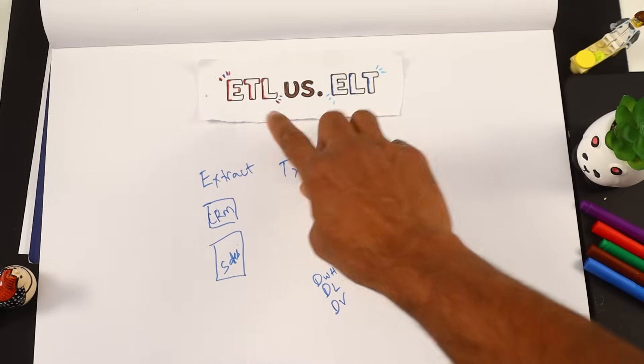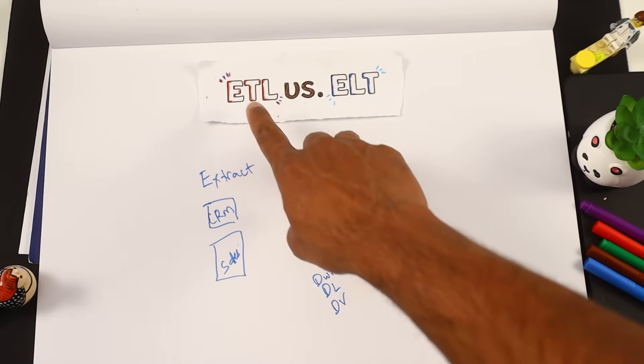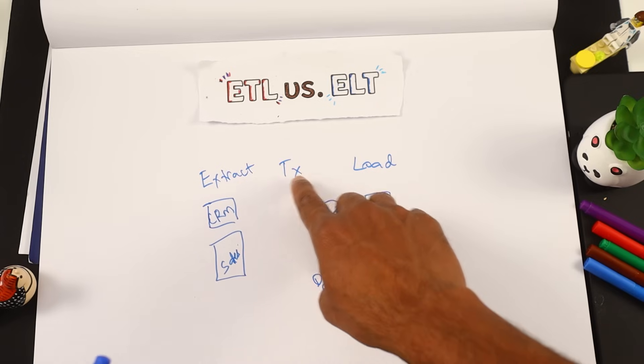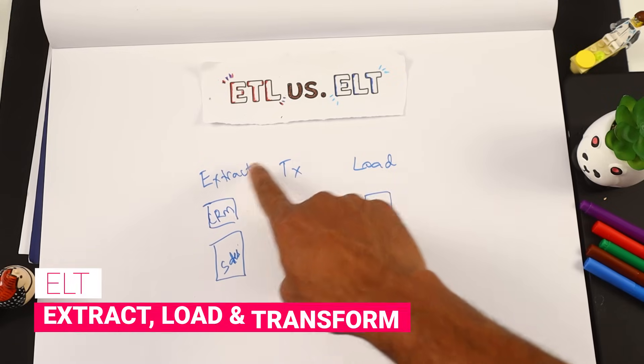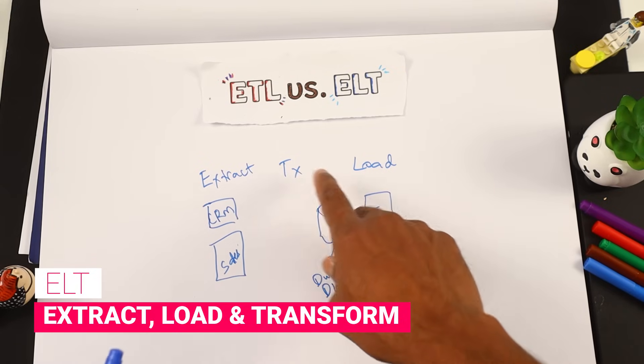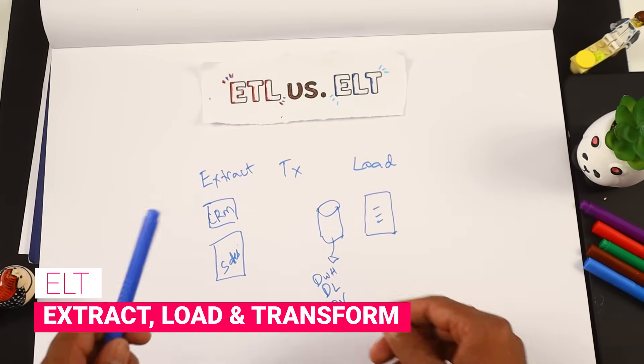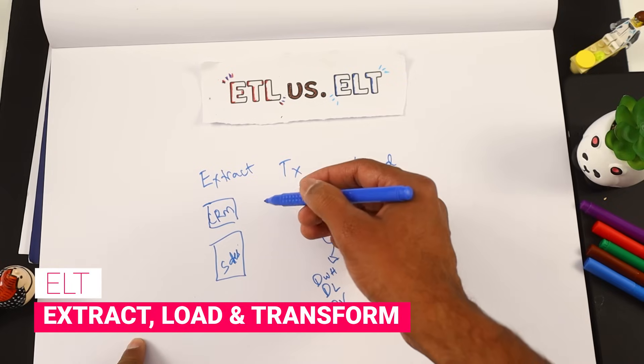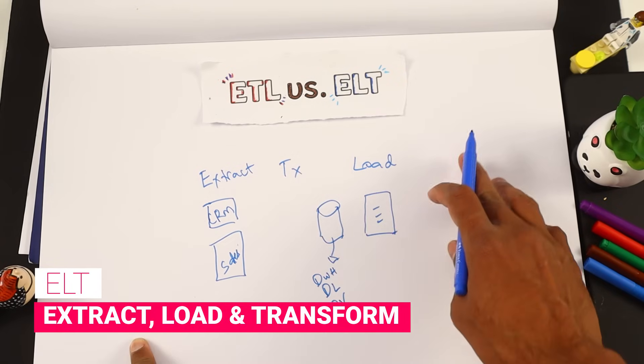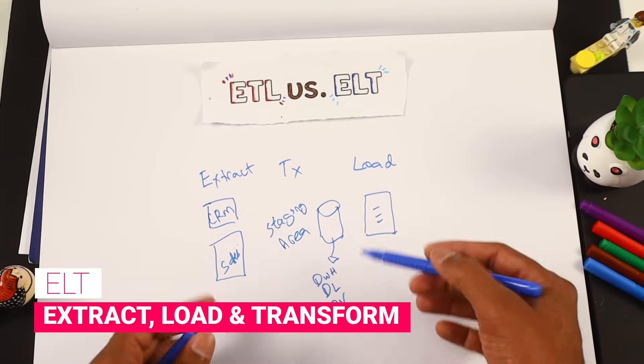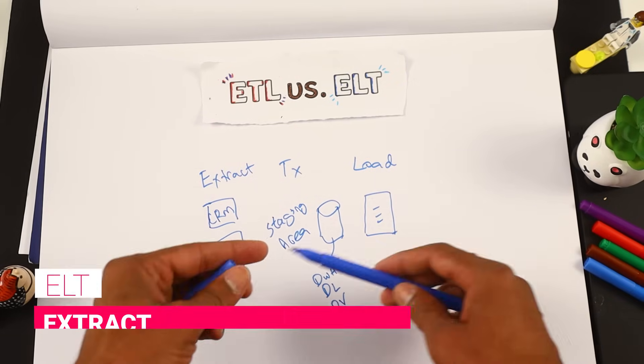Now let's understand what is ETL versus ELT. ETL stands for extract transform load. Whereas ELT on the other hand stands for extract load transform. So the only difference between these two is when the transformation is happening. Is the transformation happening right after extraction or right after loading? So that is the semantic difference between ETL and ELT.